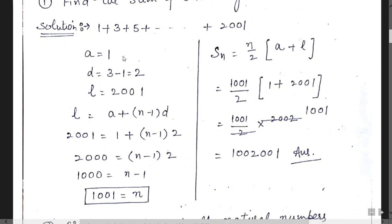In this series, the first term a is 1, d equals 3 minus 1 equals 2, and the last term l is 2001. Applying the formula l equals a plus (n minus 1) into d and inserting the values, we calculate n equals 1001. Now apply the formula Sn equals n by 2 into (a plus l): that is 1001 divided by 2, times (1 plus 2001). Simplifying, 1001 multiplied by 1001 gives 1,002,001. That is the answer.